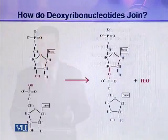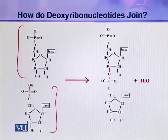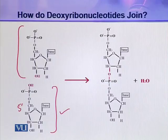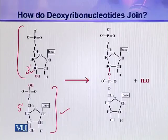How is this phosphodiester linkage formed and what type of linkage is it? Let us see in this picture. You can see these two deoxyribonucleotides and how they are joined. This phosphate group is attached to the 5 prime carbon of the pentose sugar, and this phosphate is next attached to the 3 prime carbon of the next deoxyribonucleotide. So a hydroxyl group is present at this 3 prime carbon.